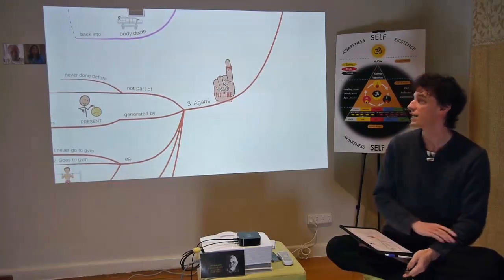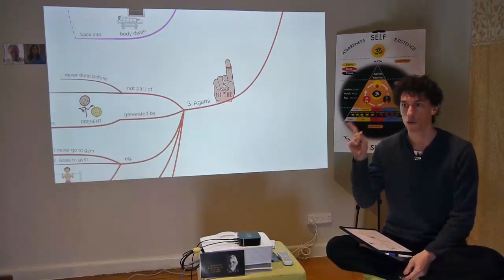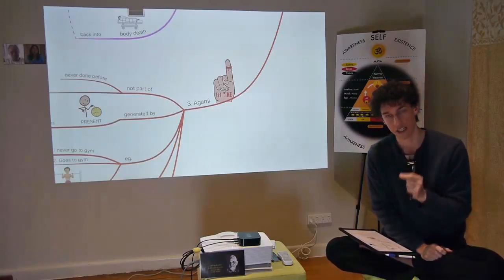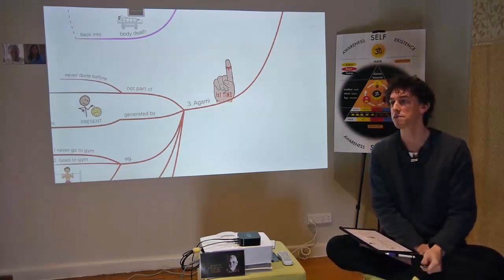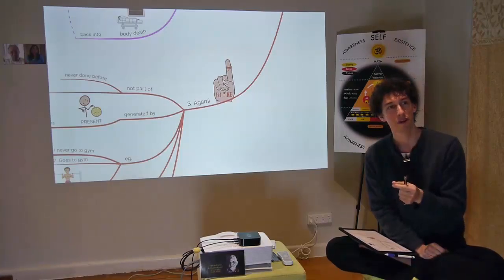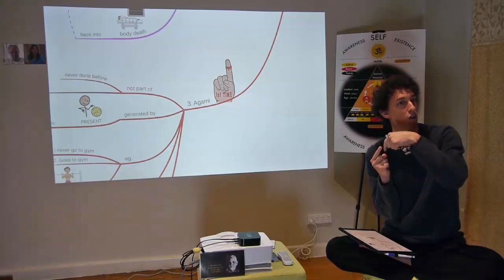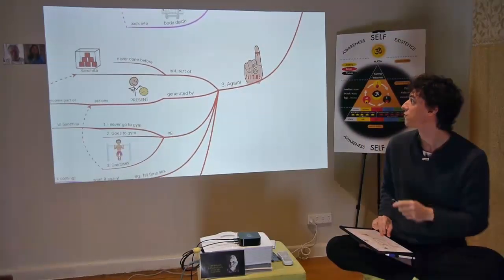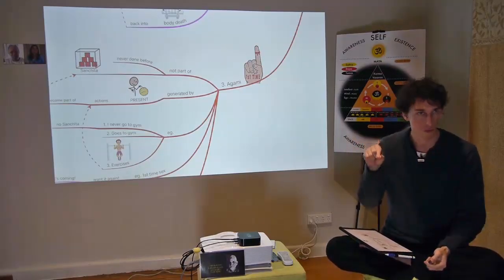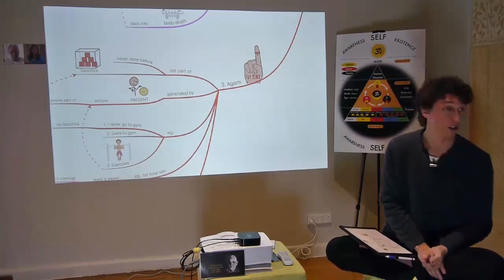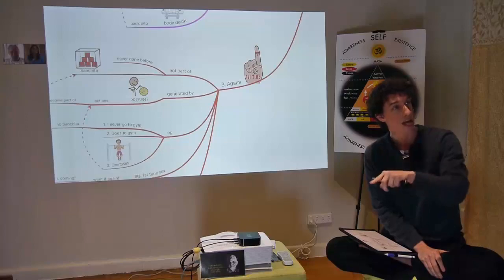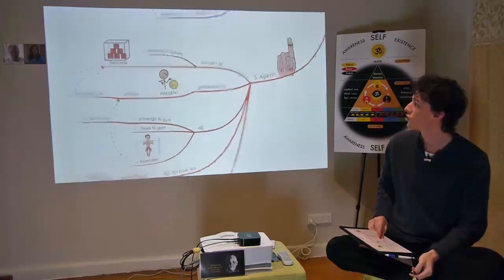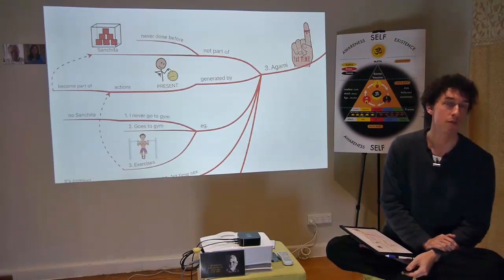The next form of karma is Agami. Once I have performed something for the first time — like white chocolate — it's coming. That means I already have a chord of entanglement to address in the future. Agami karma is the first time you do anything in the present moment. It's not part of Sanchita — Sanchita is what you have done in the past. Agami is what you do right now, for the first time.